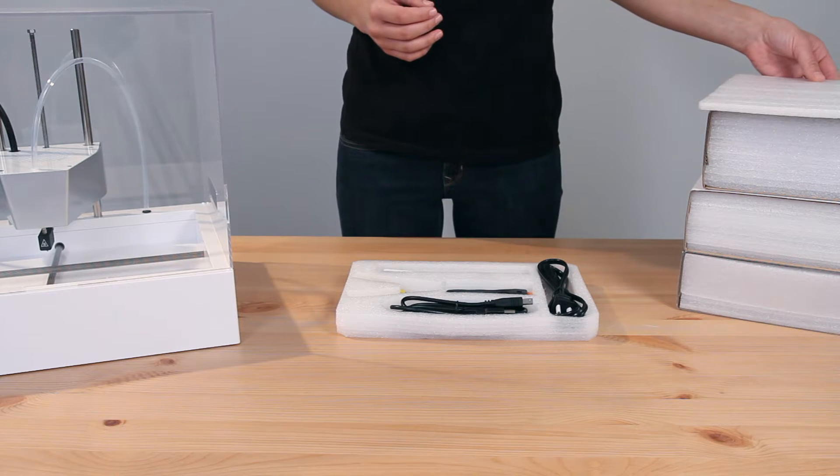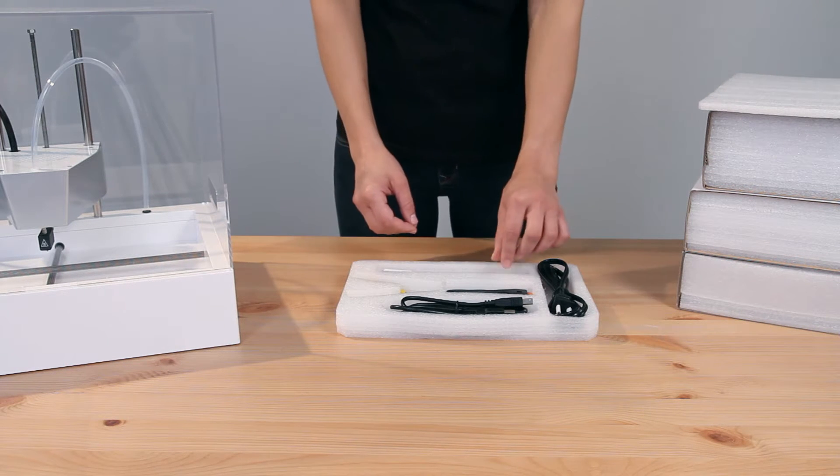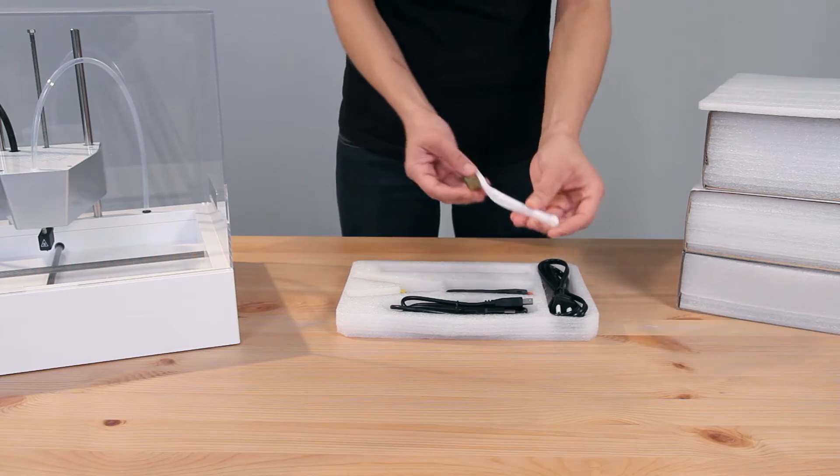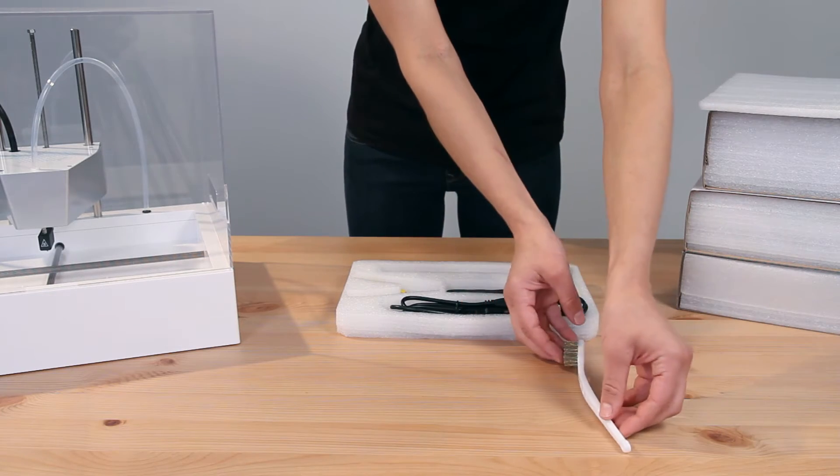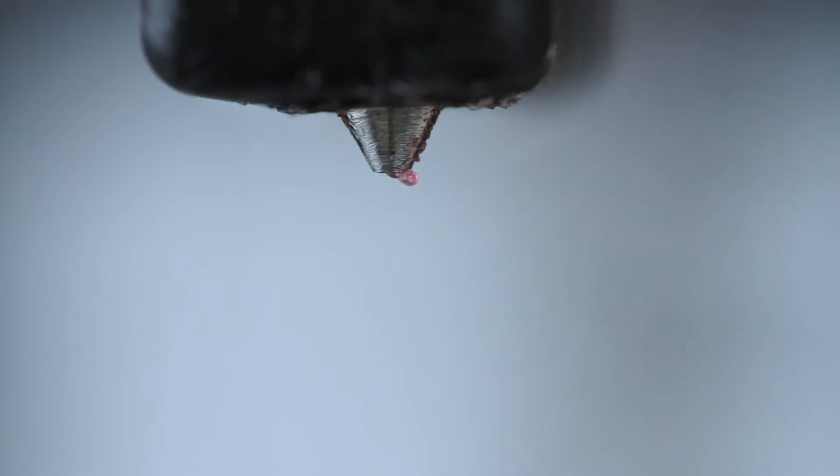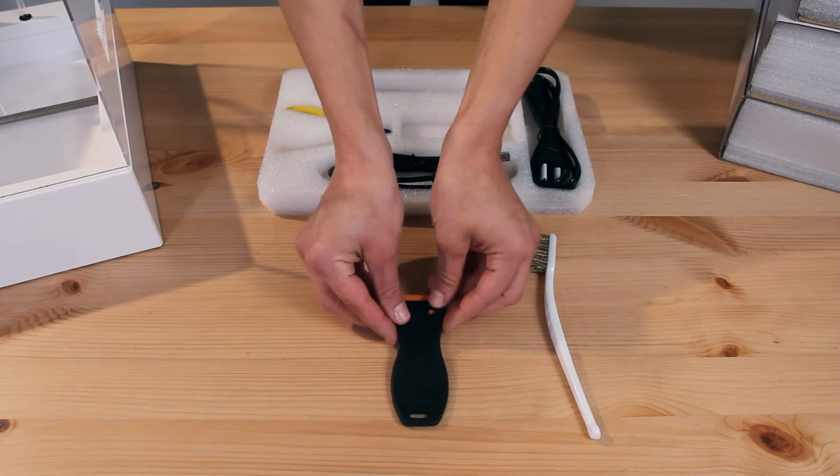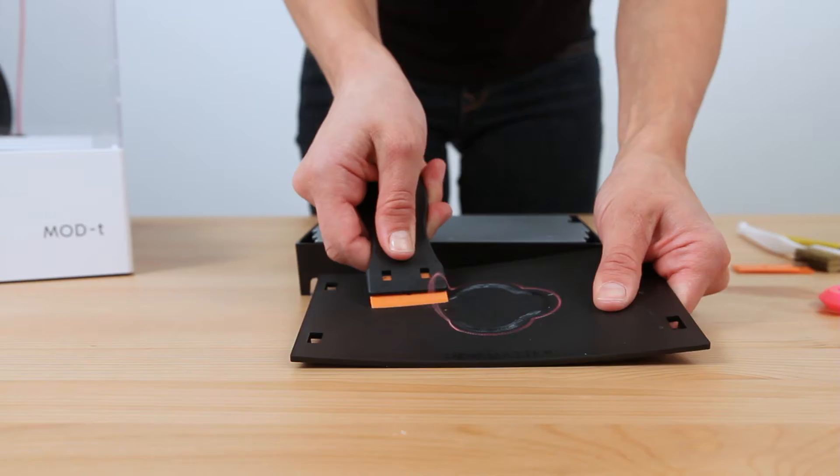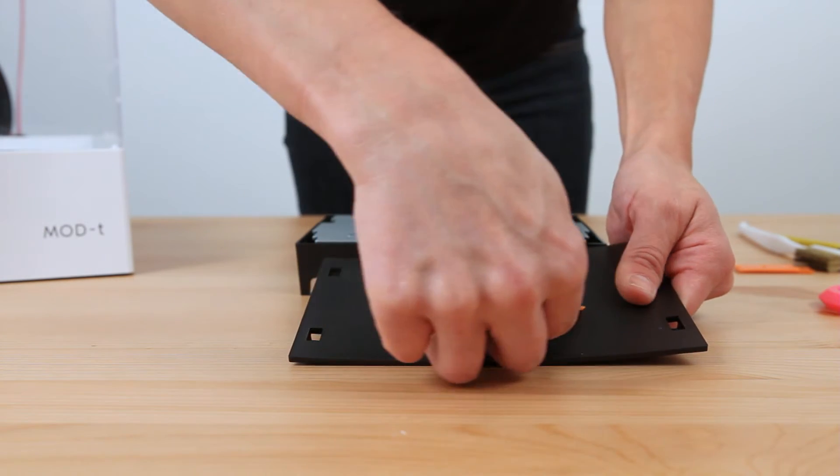Remember that tray that was hiding underneath the printer? Well that's this guy. So first we have our wire brush. He is used to help clean excess filament right off of our hot end. This is our scraper. You'll use this to clear residue from your flexible print surface plate.